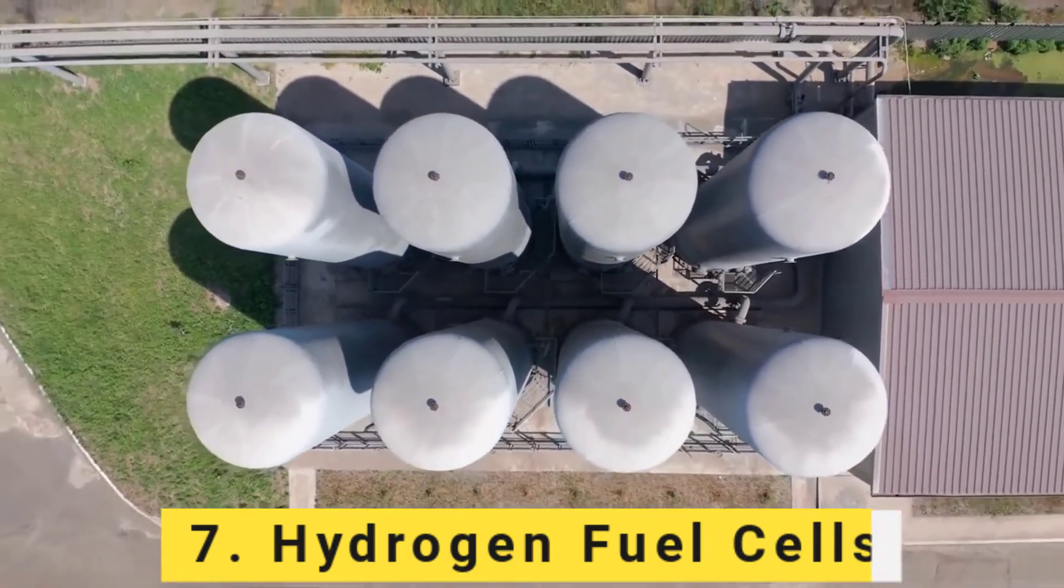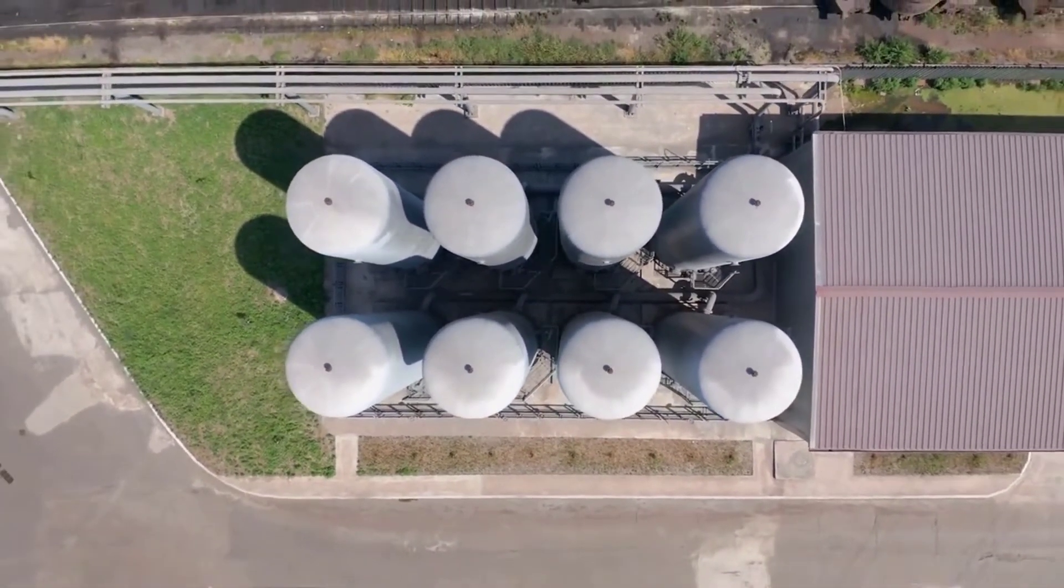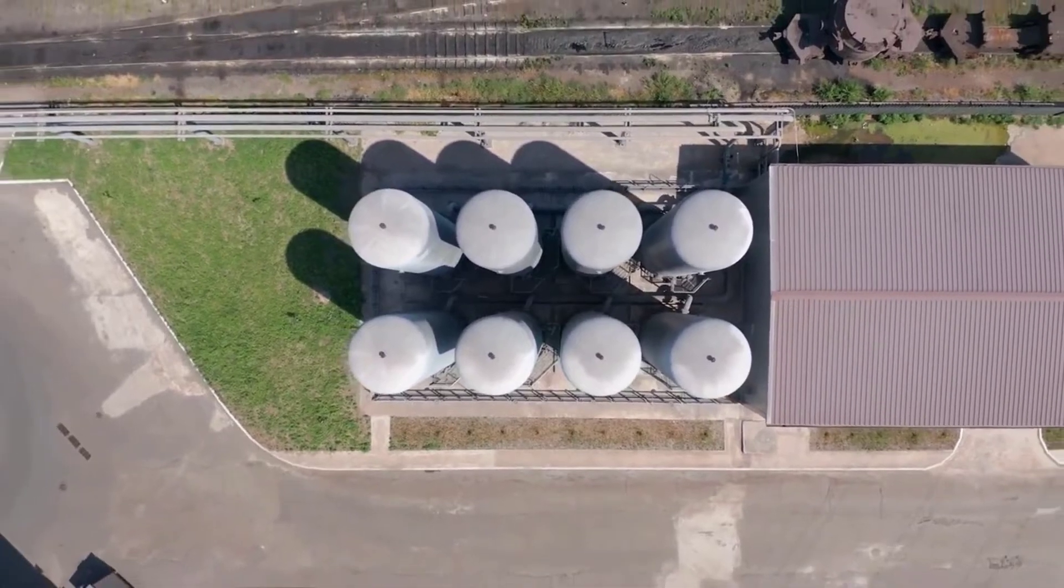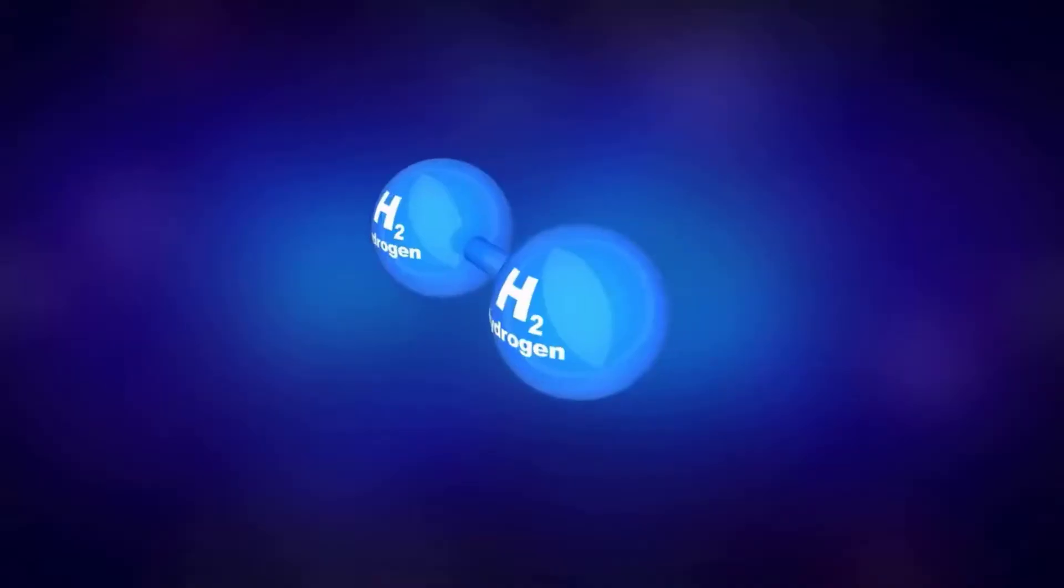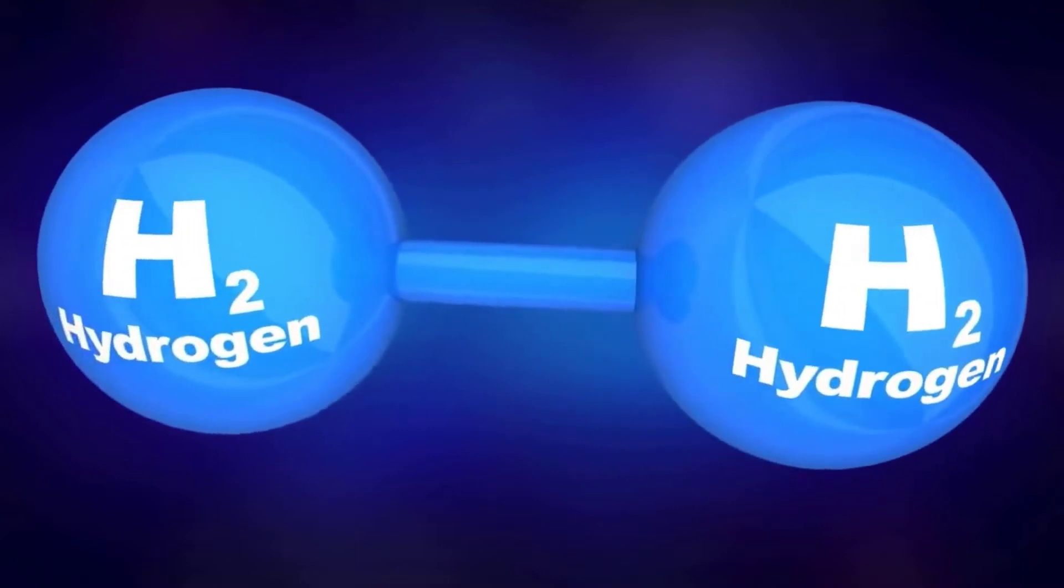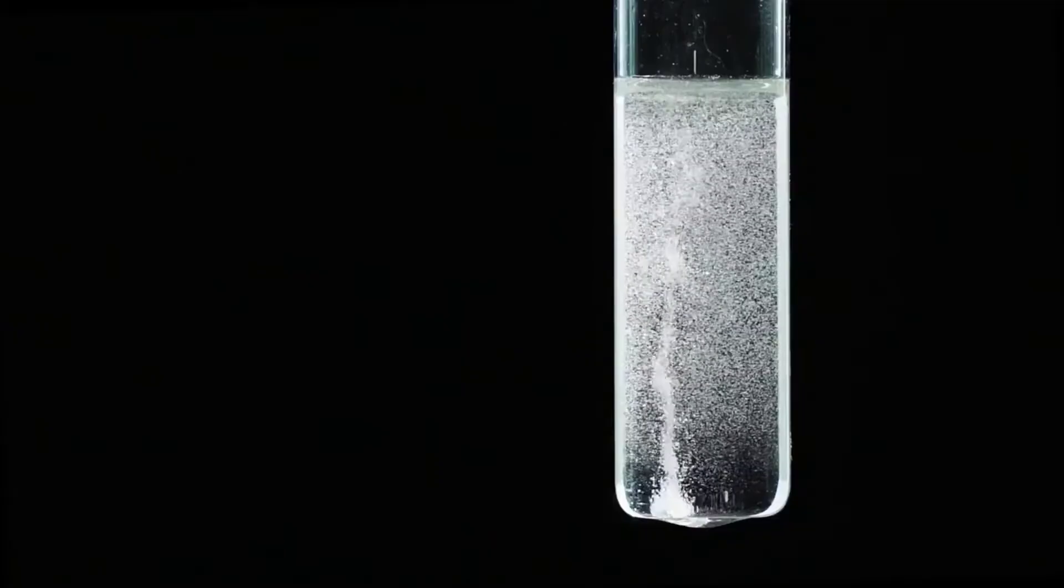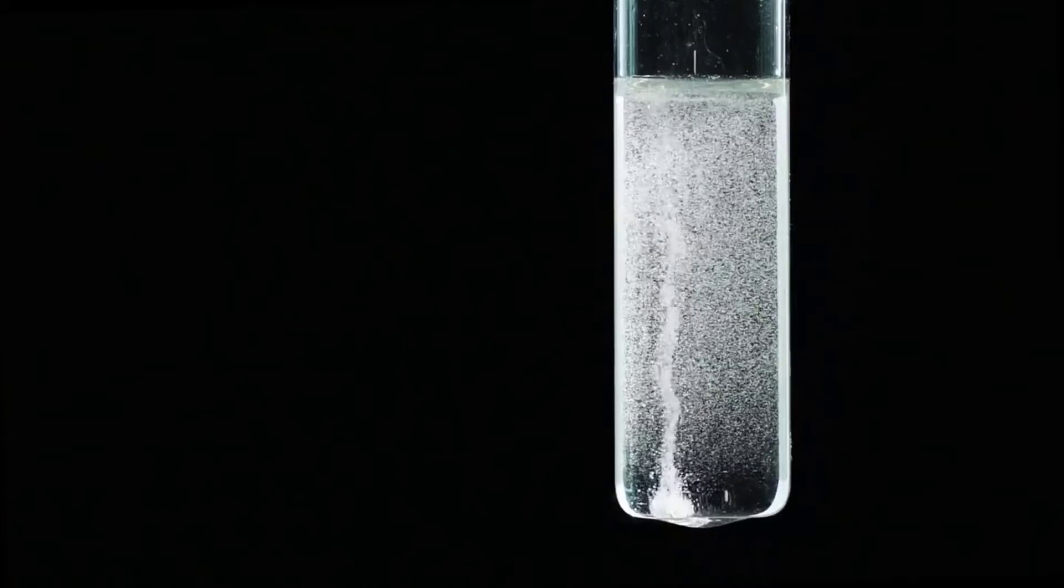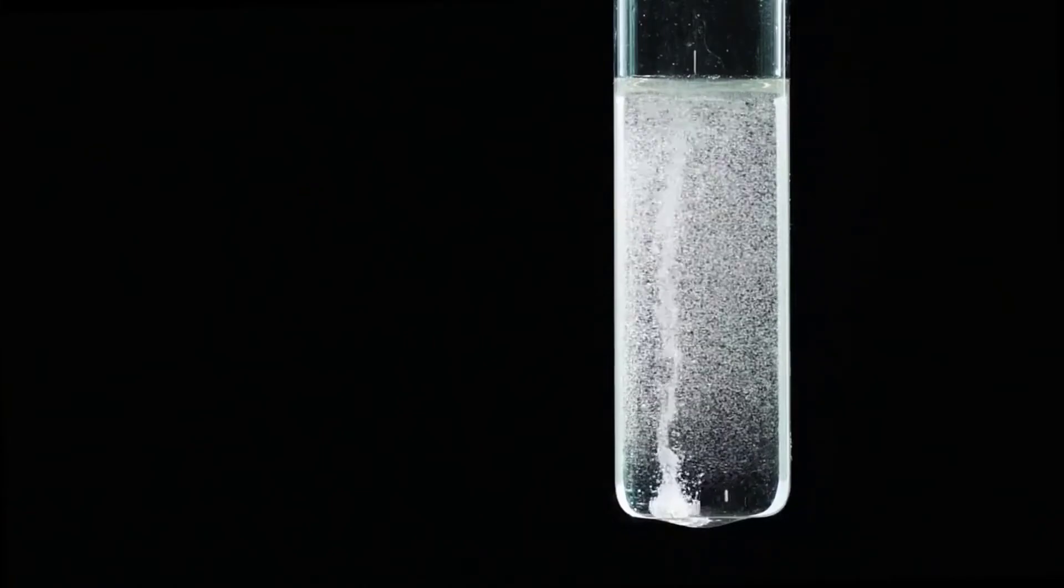Number 7: Hydrogen fuel cells. Hydrogen is the most abundant element in the universe, and it can be used to power fuel cells. Fuel cells are a type of battery that can generate electricity from a chemical reaction between hydrogen and oxygen. Hydrogen fuel cells are more efficient than gasoline engines and they emit no pollutants.